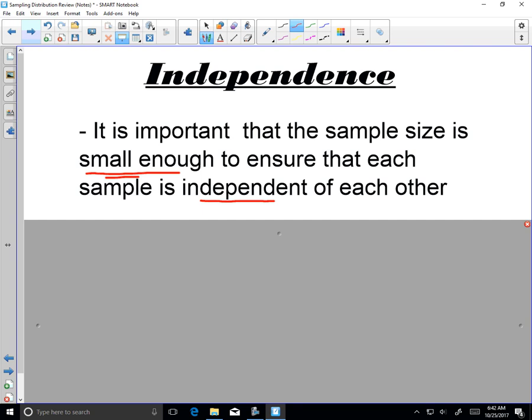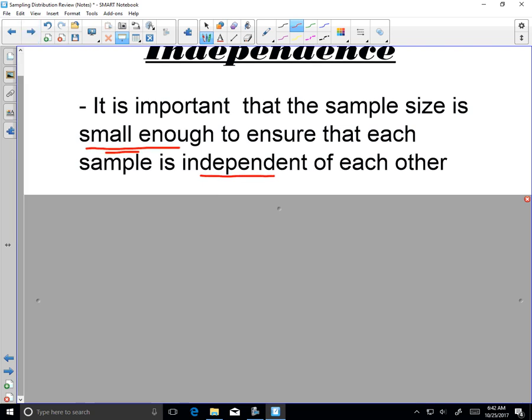So if you think about Minnetonka High School, over 3,000 students. If my sample size is 2,000, one sample of 2,000 has too much overlap of another sample of 2,000, and they wouldn't be independent of each other. Too much overlap creates an issue when it comes to independence.